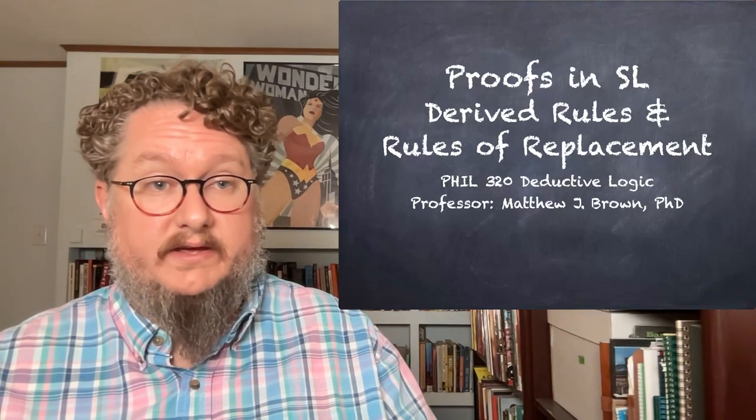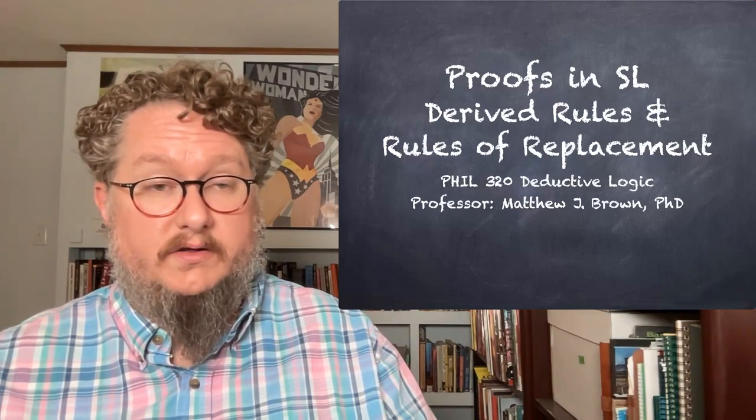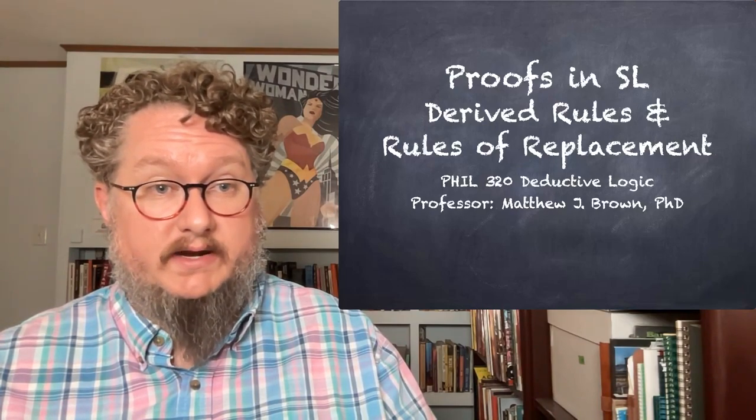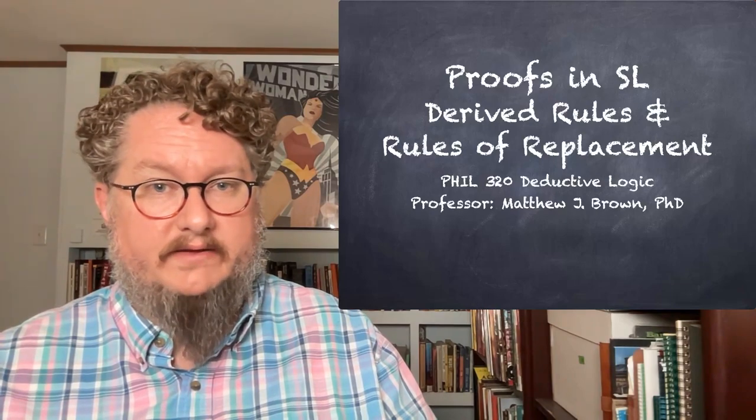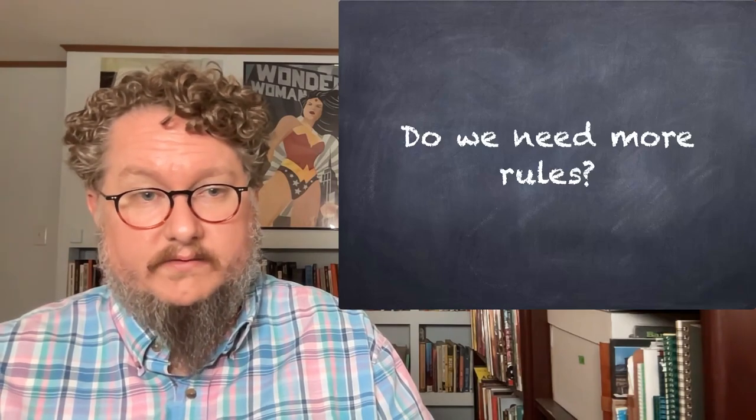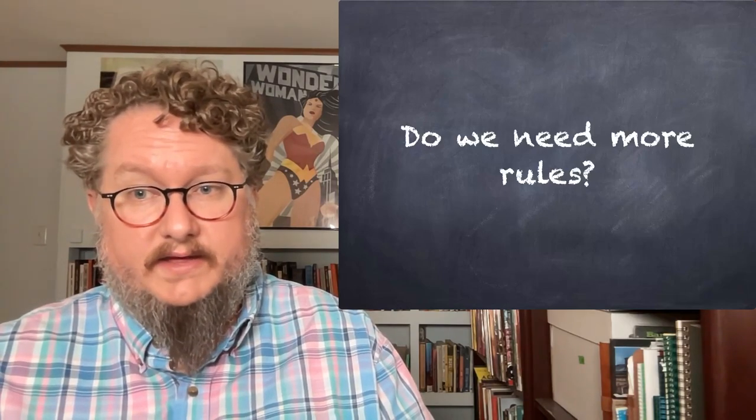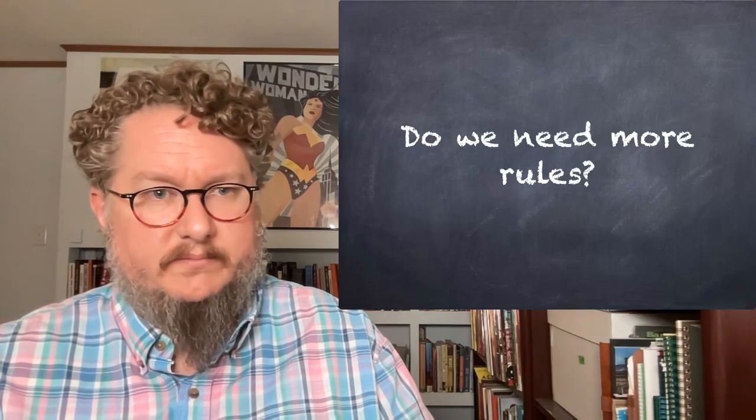Now having seen the basic rules of SL, both direct and indirect proof, all the introduction and elimination rules for our different connectives, you might ask yourself, do we need more rules? The rules we've seen so far for our natural deduction system for SL are systematic and they could let us prove anything that we need to prove, right?